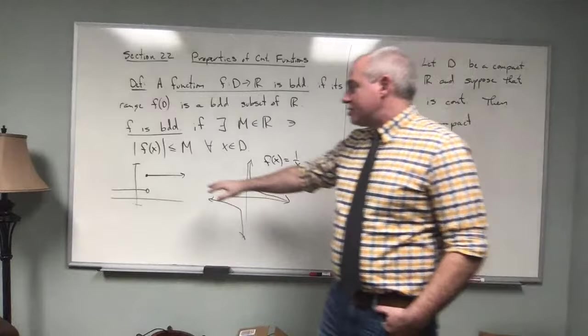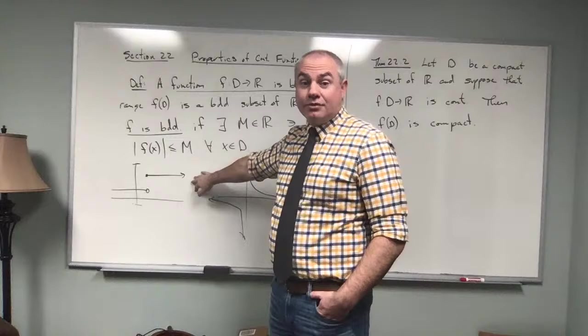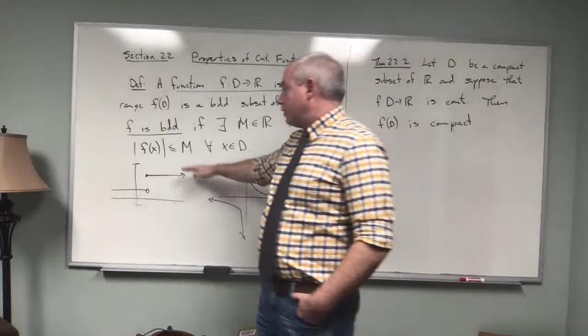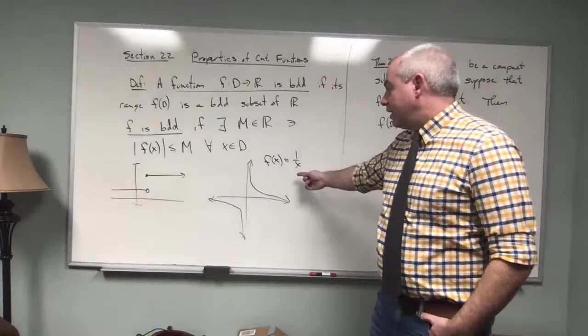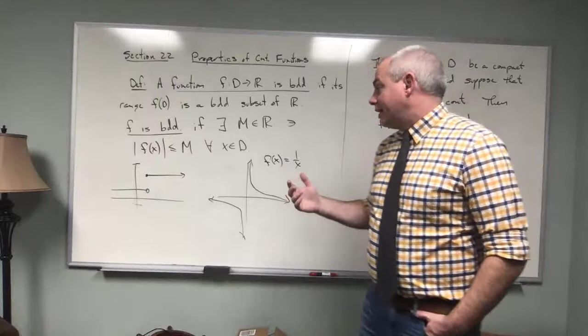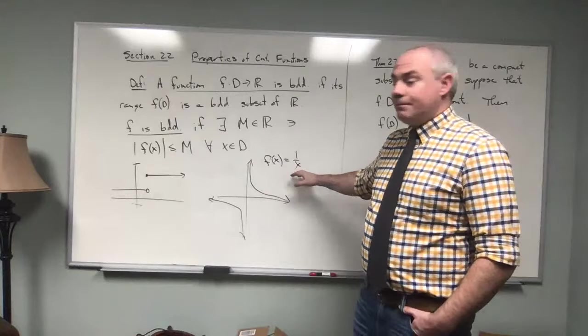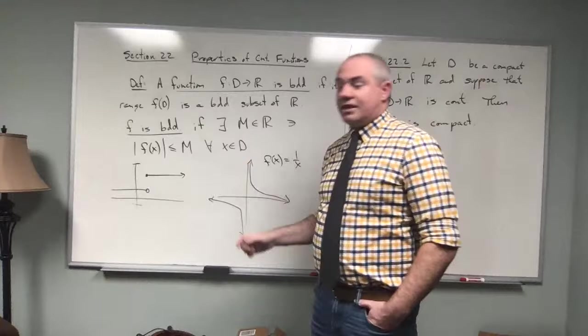Here's an example: a nice step function. This step function is bounded because all of its range values fall between an upper bound and a lower bound — there's a capital M up here and a negative M down here where all the functional values fall between. Similarly, f of x equals 1 over x, the hyperbola, is not bounded. Obviously it goes up to infinity and down to negative infinity — very not bounded.